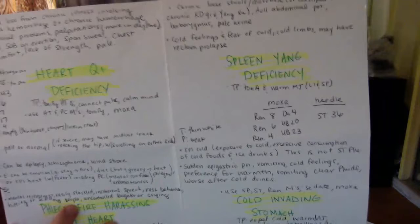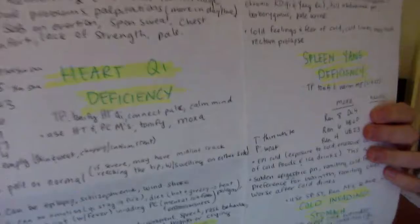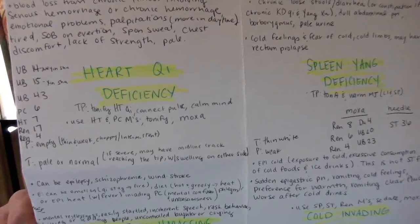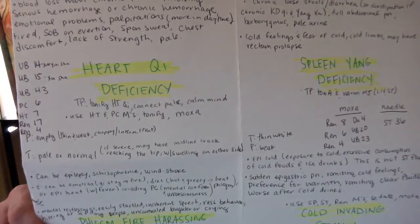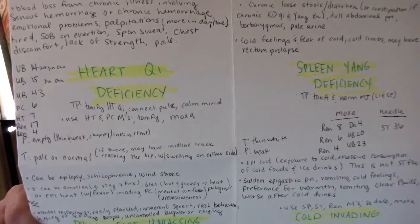Heart chi deficiency: tongue is pale or normal. If severe, may have midline crack reaching the tip and swelling on either side. Pulse is empty, thin, weak, choppy, intermittent.